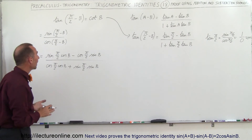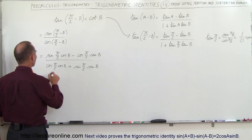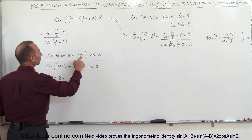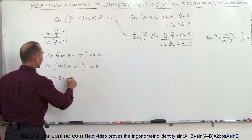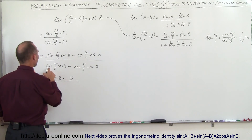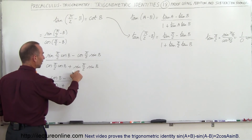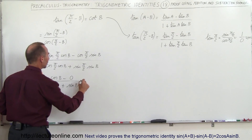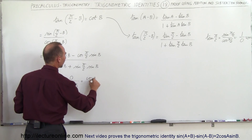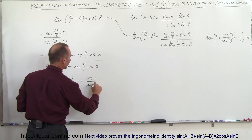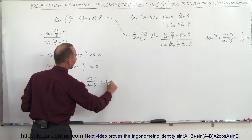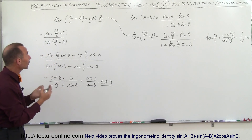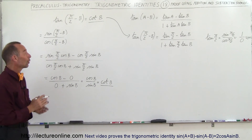Then we simplify. The sine of π/2 is one, so the numerator becomes one times cosine b, minus zero times sine b, which is just cosine b. The denominator becomes zero times cosine b, plus one times sine b, which is just sine b. So this equals cosine b divided by sine b, which can be written as the cotangent of b. And that's what we wanted to show — the tangent of π/2 minus b equals the cotangent of b.